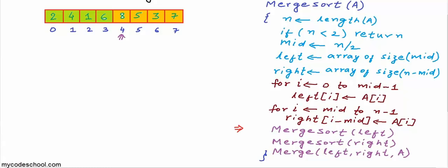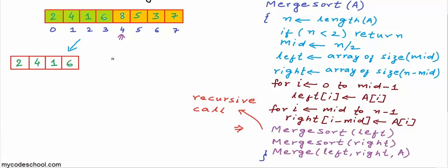Now we are making a recursive call. When a function calls itself, such a call is called a recursive call, and it's not much different from function A calling function B. At this stage, the execution of the function call with the 8-element array is paused. The machine says: let me go finish this particular function call and then come back. The machine goes on to execute merge sort on the array 2, 4, 1, 6. Once again n is not less than 2, so we will not return. This base condition — if n is less than 2, return — is the exit condition from the recursion. Without it we would go endlessly in recursion.